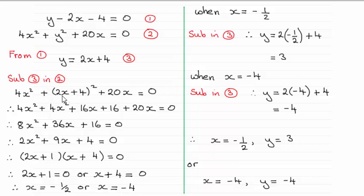Just expand the bracket here, 2x plus 4 times another 2x plus 4, and that gives us 4x squared plus 16x plus 16.